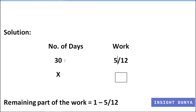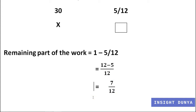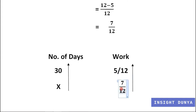According to the question, 5 over 12 part of the work is completed in 30 days. Now, what value will we write below 5 over 12? The remaining part of the work is 1 minus 5 over 12, which equals 12 minus 5 over 12, which is 7 over 12. So I write 7 over 12 in the box below 5 over 12, because 7 over 12 plus 5 over 12 equals 1.